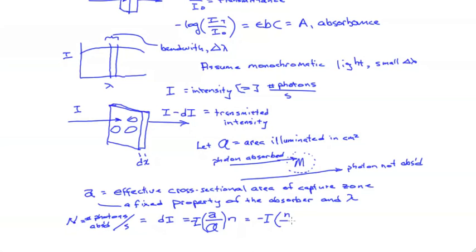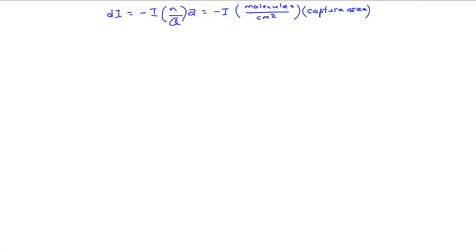Putting the number of absorber molecules over the illuminated area makes us think about a concentration. So we have the change in photons equal to the intensity times a concentration factor times the capture area.